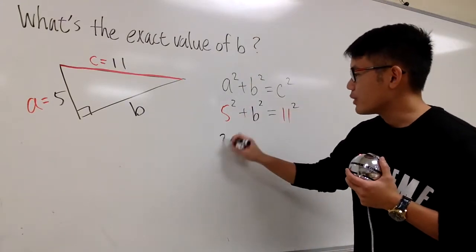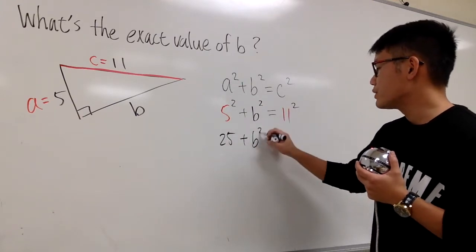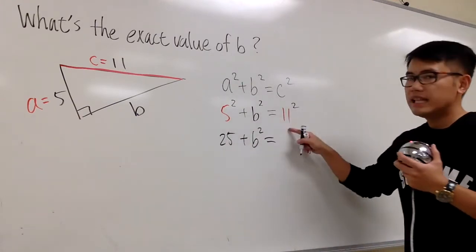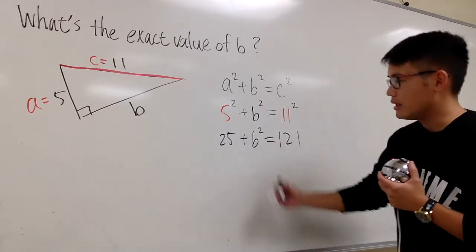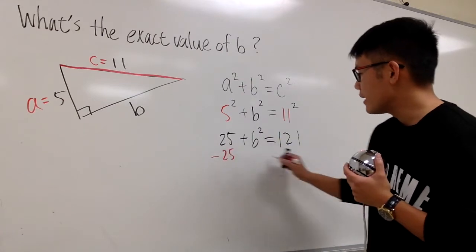5² is 25, and then plus b, I don't know, so b², this is equal to 11², that's 11 times 11, it's going to give us 121. And as usual, we minus 25 on both sides.